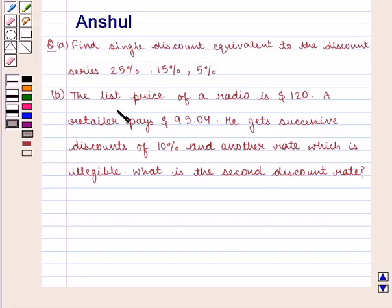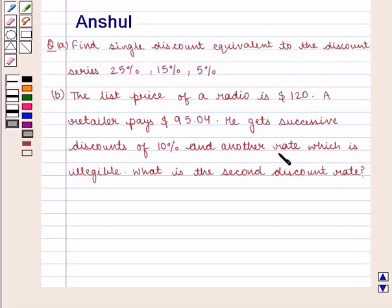Part B: The list price of a radio is $120. A retailer pays $95.04 and gets successive discounts of 10% and another rate which is illegible. What is the second discount rate? Now moving on to the solution.